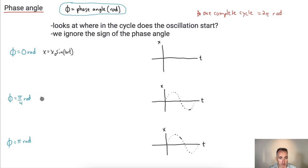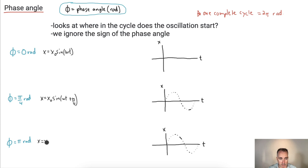By contrast, if we did this one, it would be x equals x₀ times sine of (omega·t plus pi over four), for example. And this one here would be x equals x₀ times sine of (omega·t plus pi). Let's see what the difference is between these — I think that's going to really help us out.